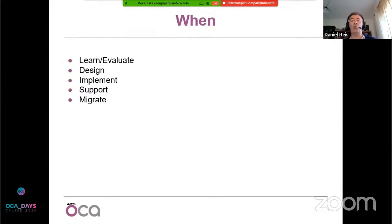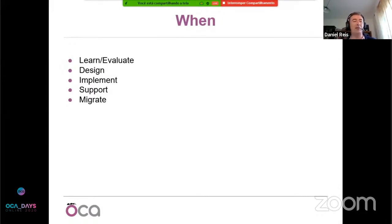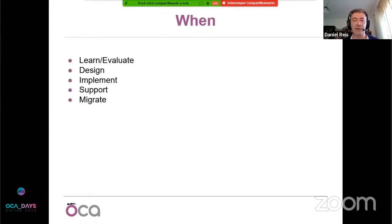At the implementation stage, developers build the code. At the support phase, if instead of having a private custom module you make it more generic and publish it as an OCA module, odds are it's also adopted by other people with the same business need. They help you maintain it, do bug fixing for free, and migrate to next versions for free. And when you're migrating systems, it's very helpful when 60 to 80 percent of the modules you use are already migrated.